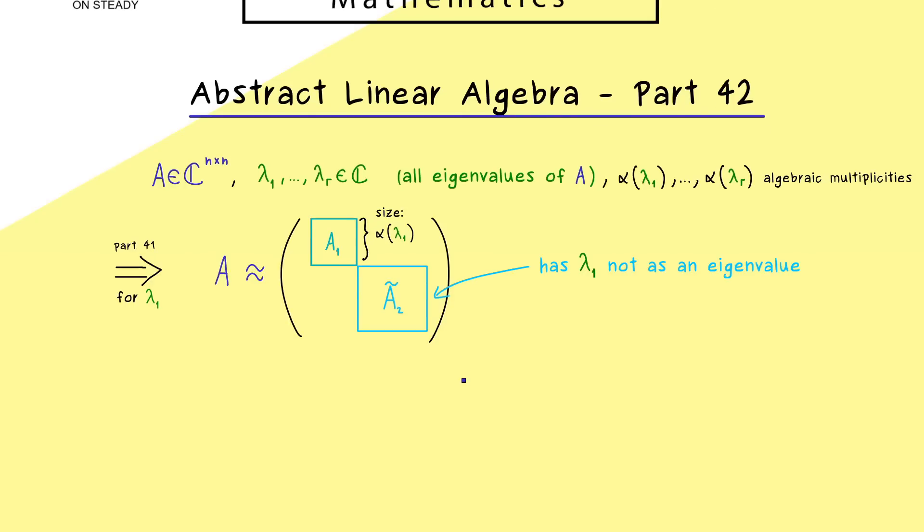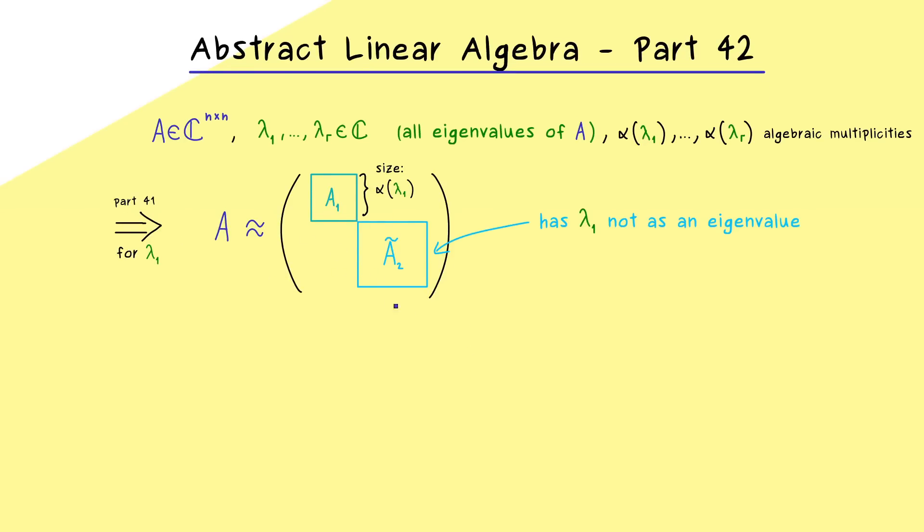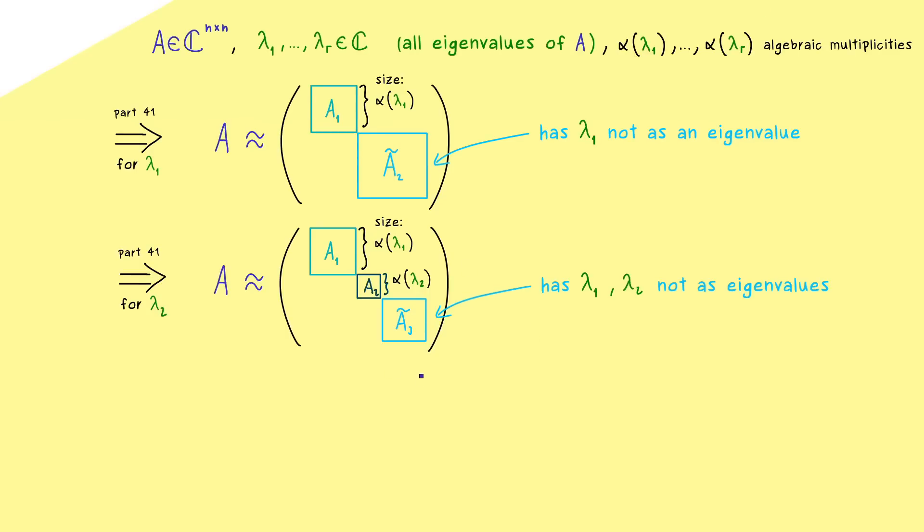Therefore, it should not surprise you that we want to apply our result from part 41 again for the second block. And moreover, we can also just do it for the next possible eigenvalue in the list. Hence what we get is again a block diagonal matrix. So we get our correct A₂ and something we call A₃ tilde. And now we can use our two pieces of information again, which means we have the size of the first block given by the algebraic multiplicity, and on the other hand the third block here does not contain our two eigenvalues. So the whole thing should be clear. We go through it recursively. Or to say it shortly, by induction we get our whole block diagonal form, which means our matrix A can be written in this block form where the blocks have sizes given by the algebraic multiplicities.